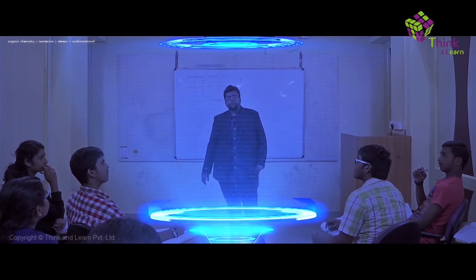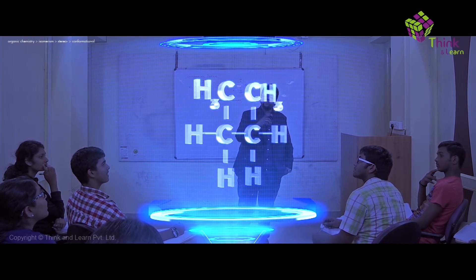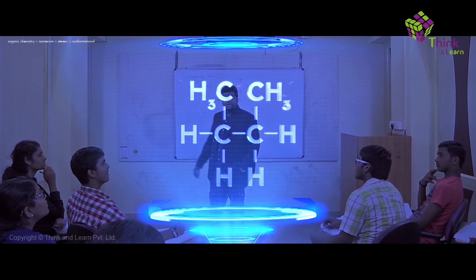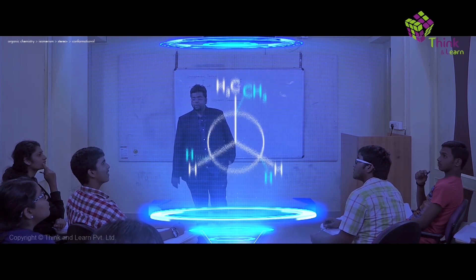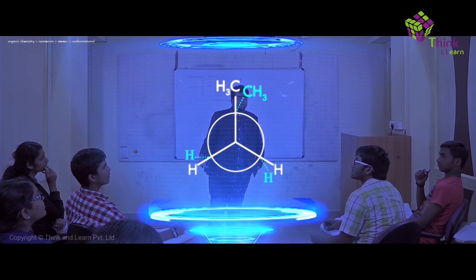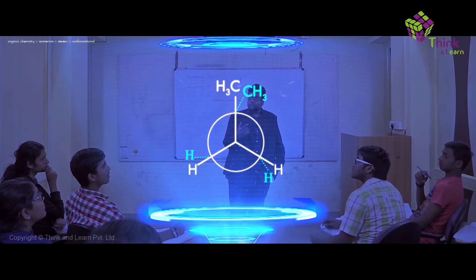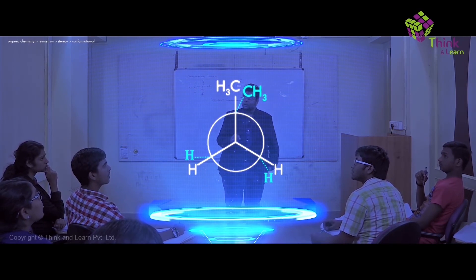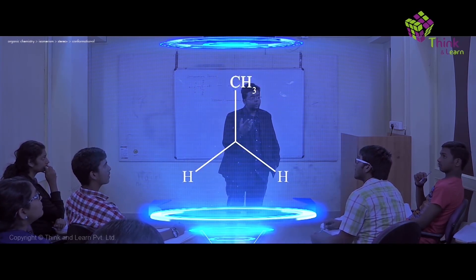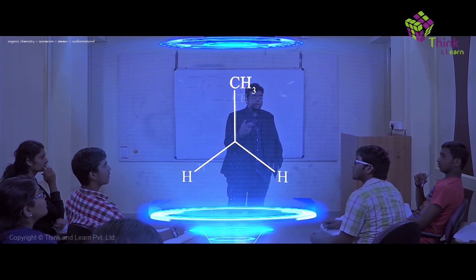So now if I have butane, how would you draw the Newman projection for butane? This is what will happen. Over here, what type of conformation do you have? Everything is completely eclipsing the atoms which are present on the distal carbon. So this is what is called the eclipsed conformation of butane, because the CH3 on one carbon and the CH3 of the other carbon is exactly eclipsing.